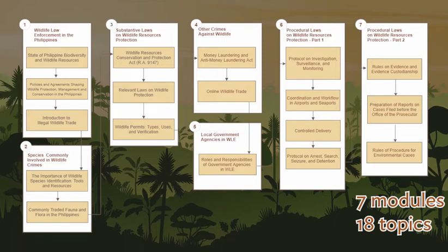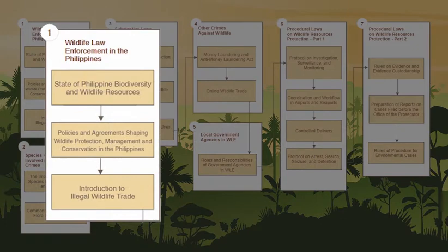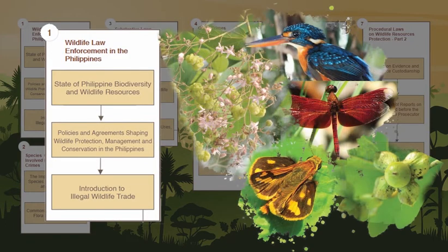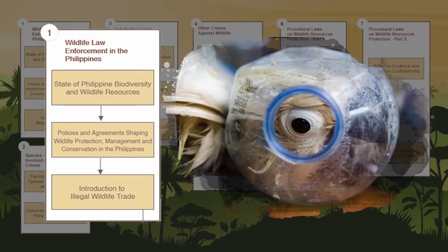There are seven modules and 18 topics in this course. The first module, Wildlife Law Enforcement in the Philippines, provides an overview of Philippine biodiversity and the policies and agreements that shape wildlife law enforcement in the country. It includes an introduction to illegal wildlife trade, one of the most serious threats to Philippine biodiversity and sustainable economic development.